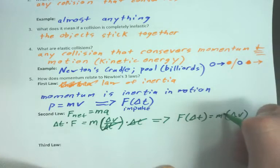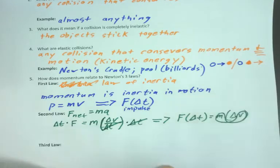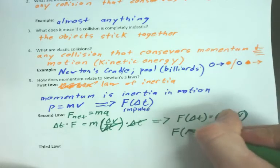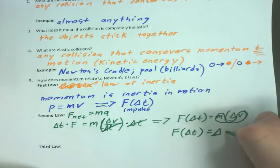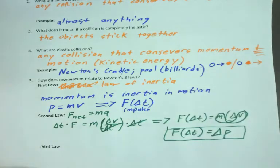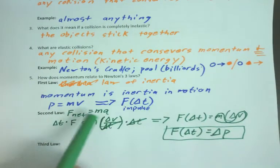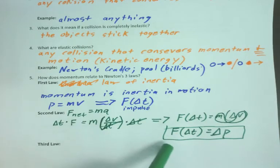F delta t equals m delta v. Oh, but notice what I got here. mv, that's momentum. So instead of mv, I'm going to write P. And oh snap. Get excited. So you just had your minds blown by science. Only I get that excited about it, but still. This is this. It's the same equation. This equation, I tricked you into doing last unit again.